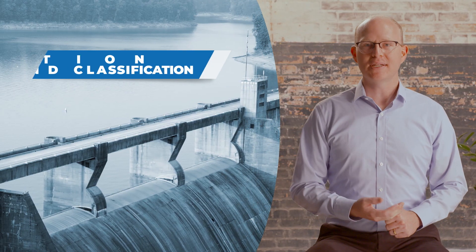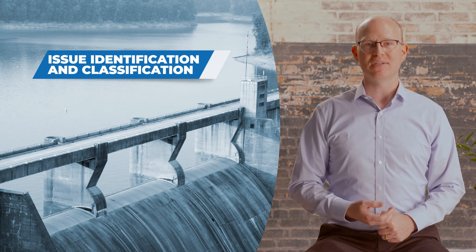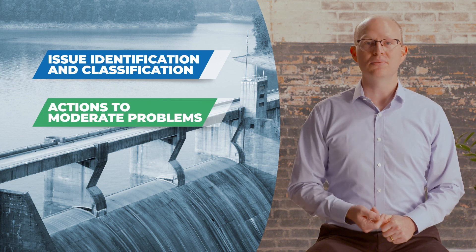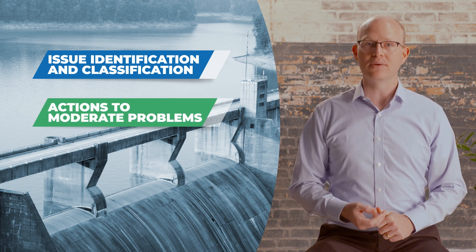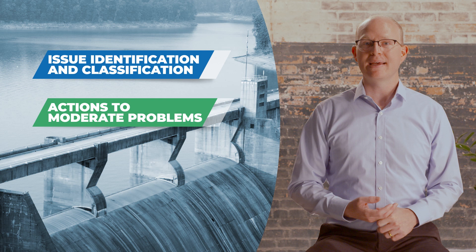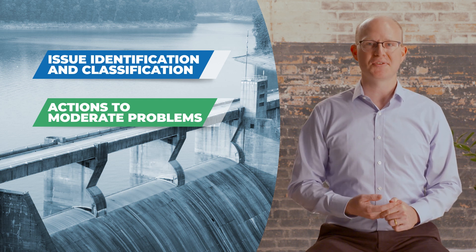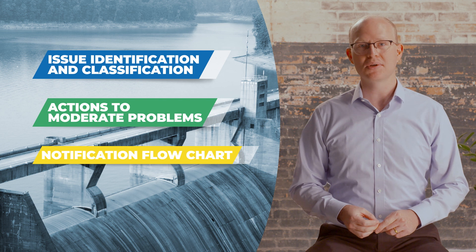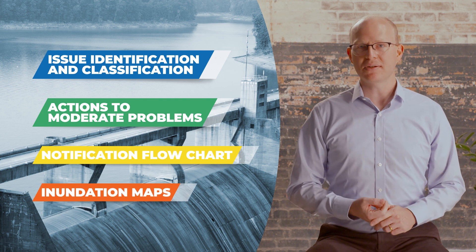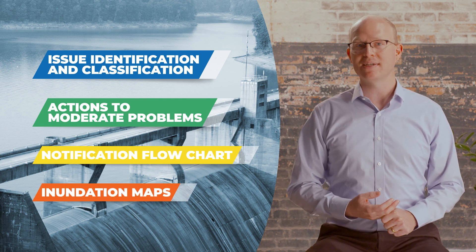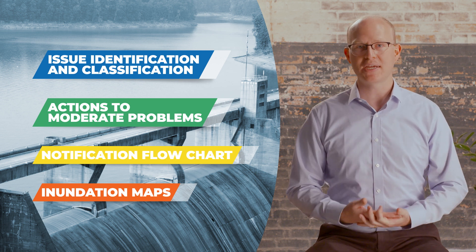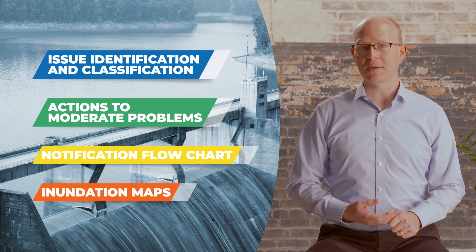Your EAP should include at least the following: how you will identify and classify dam safety issues based on severity; what you will do to moderate a problem at the dam, including where you'll get materials and equipment that may be necessary during an emergency; a flow chart to notify emergency management authorities; and a description of the area downstream at risk of inundation from failure to help coordinate evacuations, road closures, and warning messages.